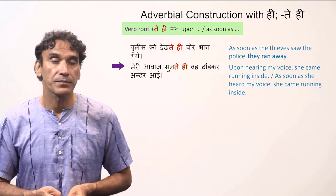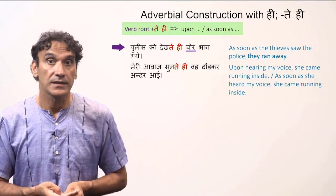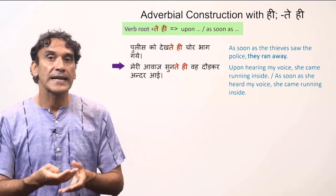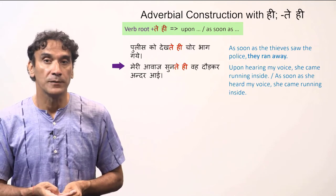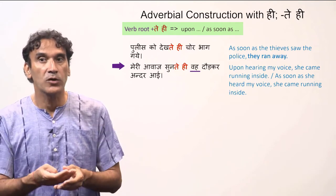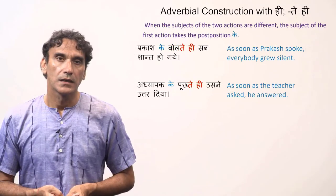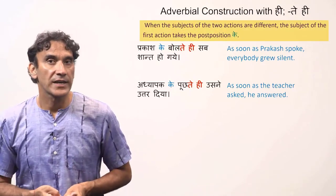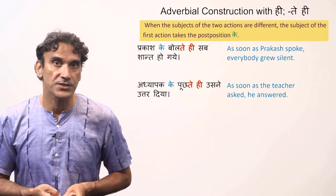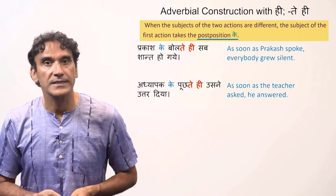As soon as she heard my voice, she came running inside. Keep in mind that the subjects of both verbs should be the same. In the first example, the subject is the same — the thieves saw the police and the thieves ran away. In the second example, both verbs 'sunna' and 'aana' have the same subject — she heard my voice and she came running inside. The same adverbial construction can also have two different subjects.